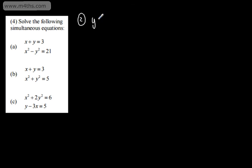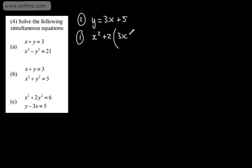Now let's look at the next one: x squared plus 2y squared equals 6, and y minus 3x equals 5. Looking ahead, we have x squared and 2y squared. The easiest approach is to write equation 2 as y equals 3x plus 5, and substitute that in. You could make x the subject, but that gives a fraction. So, equation 1 becomes x squared plus 2 lots of 3x plus 5 all squared, equal to 6.